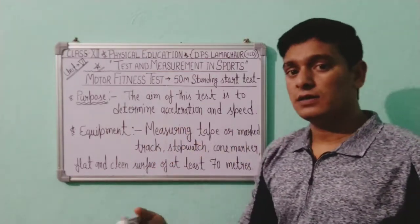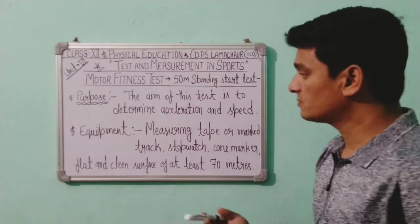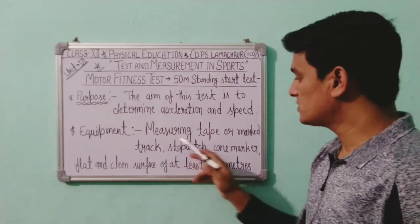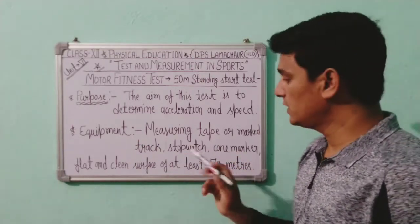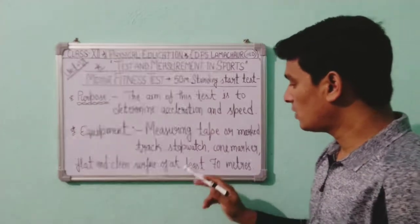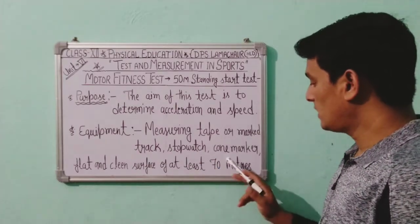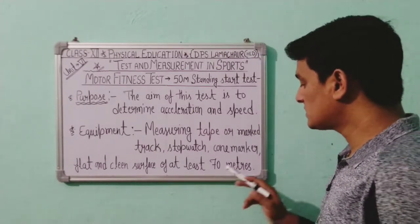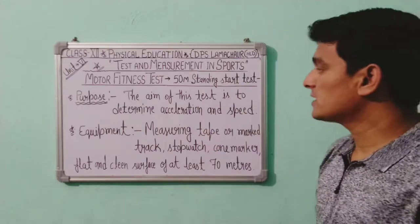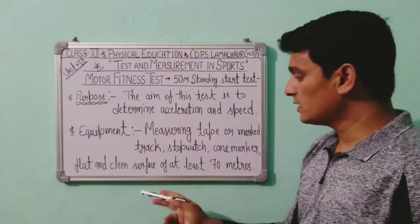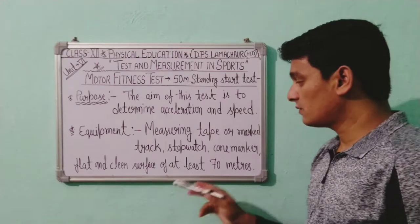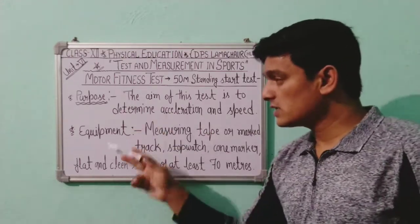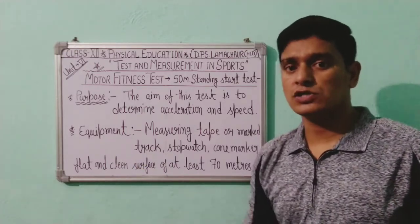The equipment required for this test includes: a measuring tape or marked track, a stopwatch, cone markers, and a flat and clean surface of at least 70 meters. Although it is a 50 meter test, we need a surface of at least 70 meters.